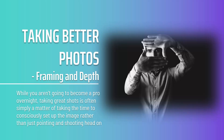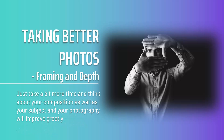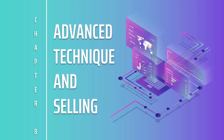Taking great shots is often simply a matter of taking the time to consciously set up the image rather than just pointing and shooting head-on. Think about your foreground and background image elements — having a leaf in the foreground could help create a sense of three-dimensional depth. Look for paths and lines that can draw the eye in, and think about elements that can frame the action. You don't necessarily need professional lighting equipment, but thinking about the angle in relationship to natural light sources can make a big difference. Take a bit more time and think about your composition as well as your subject, and your photography will improve greatly.